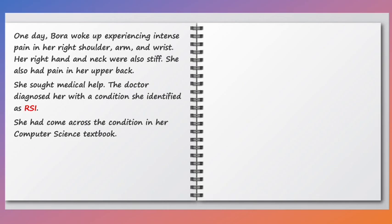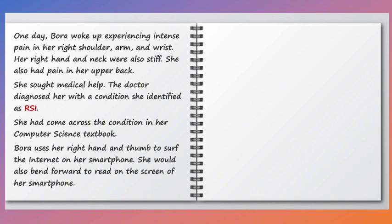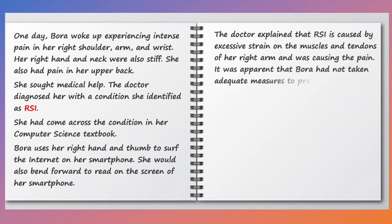Bora had come across the condition in her computer science textbook. Bora uses her right hand and thumb to surf the internet on her smartphone, and would also bend forward to read on the screen. The doctor explained that RSI had been caused by excessive strain on the muscles and tendons of her right arm, and it was apparent that Bora had not taken adequate measures to prevent RSI.